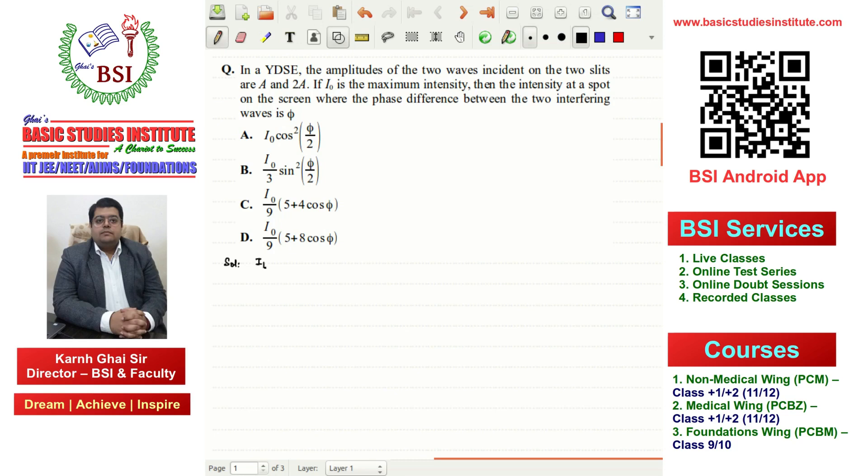The intensity from one slit, I1, can be written as k times a squared, since intensity is proportional to amplitude squared. The intensity from the second slit, I2, is k times (2a)² .